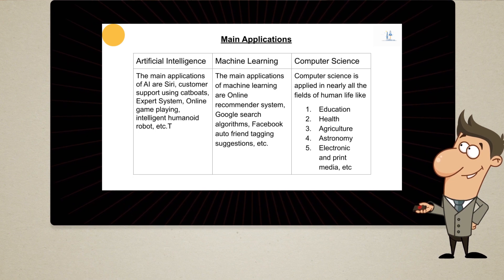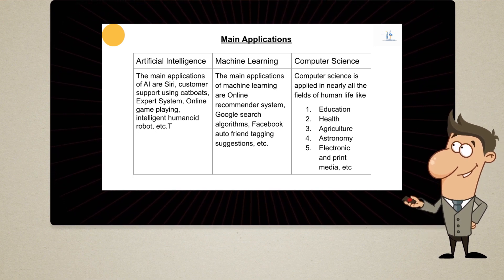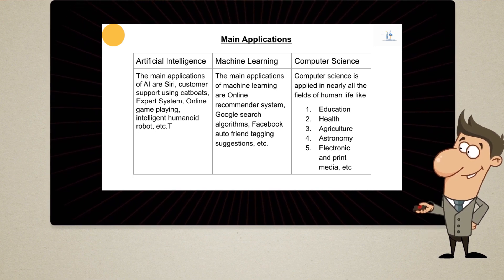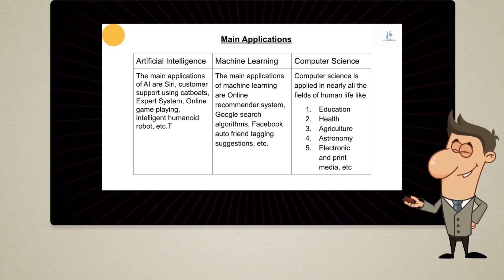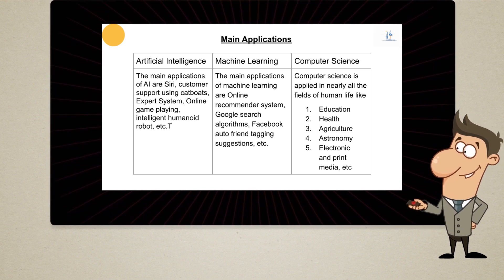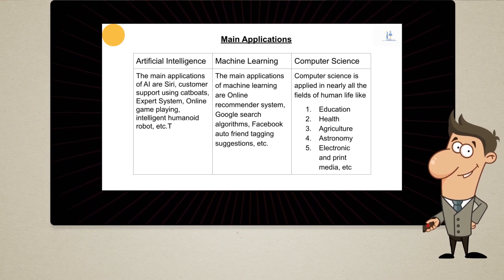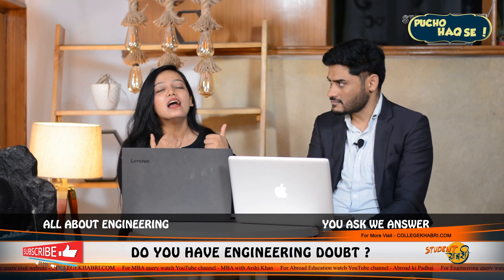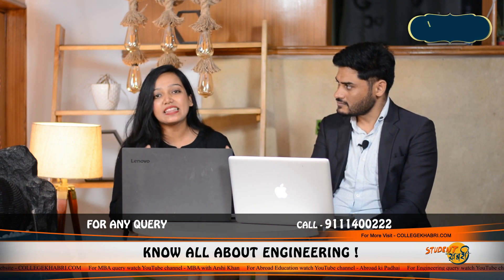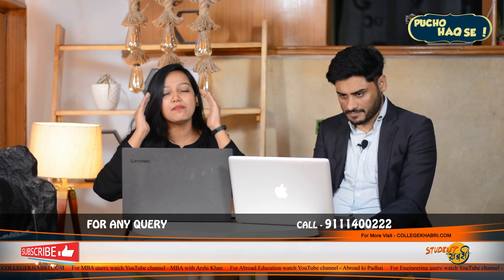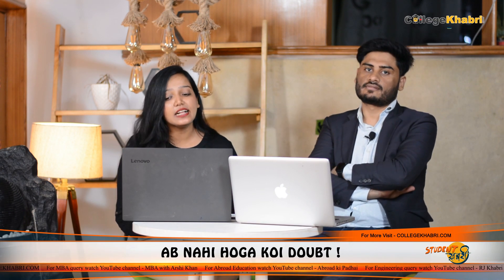In machine learning, the main applications are all online. For example, recommendation systems and especially Google Search — where the algorithm is fed a lot of data and provides relevant results. Here you have a system that uses data, and from that data the system is trained to process and provide accurate results.